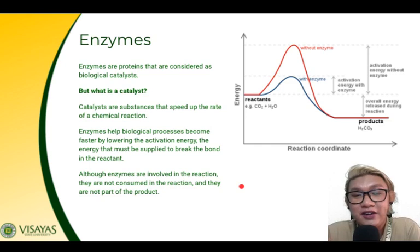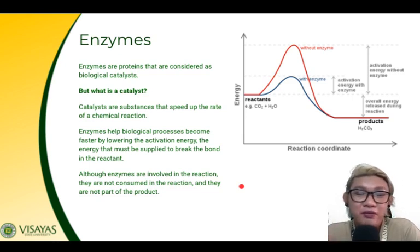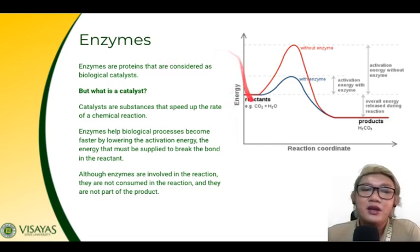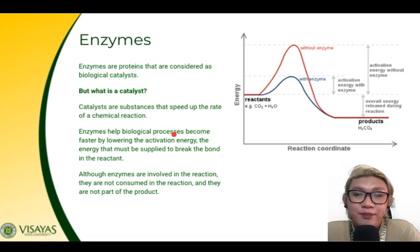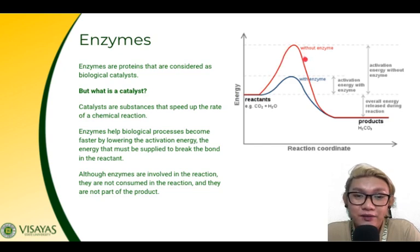For example, if you want to break down maltose to produce two glucose molecules, the enzyme maltase helps catalyze that reaction. Looking at an energy graph, you can see the activation energy — the gap between the reactant energy level and the peak — is very high without an enzyme. With an enzyme, the activation energy is lowered, making the reaction proceed more easily and quickly.